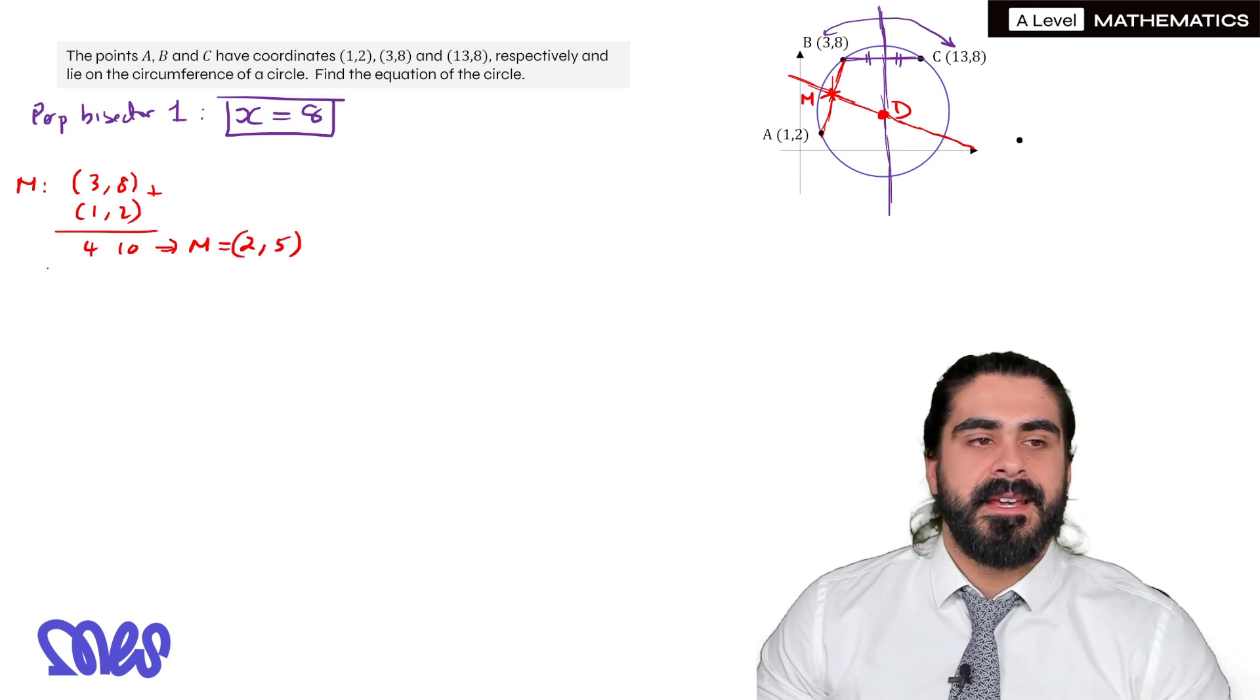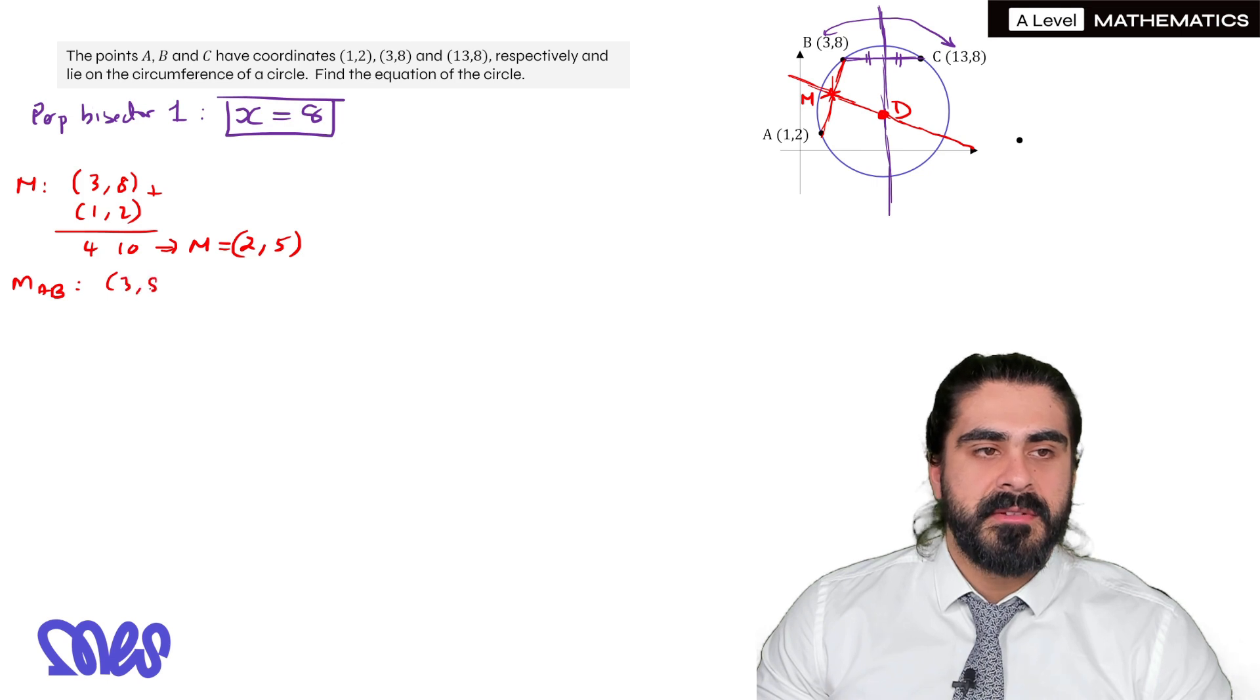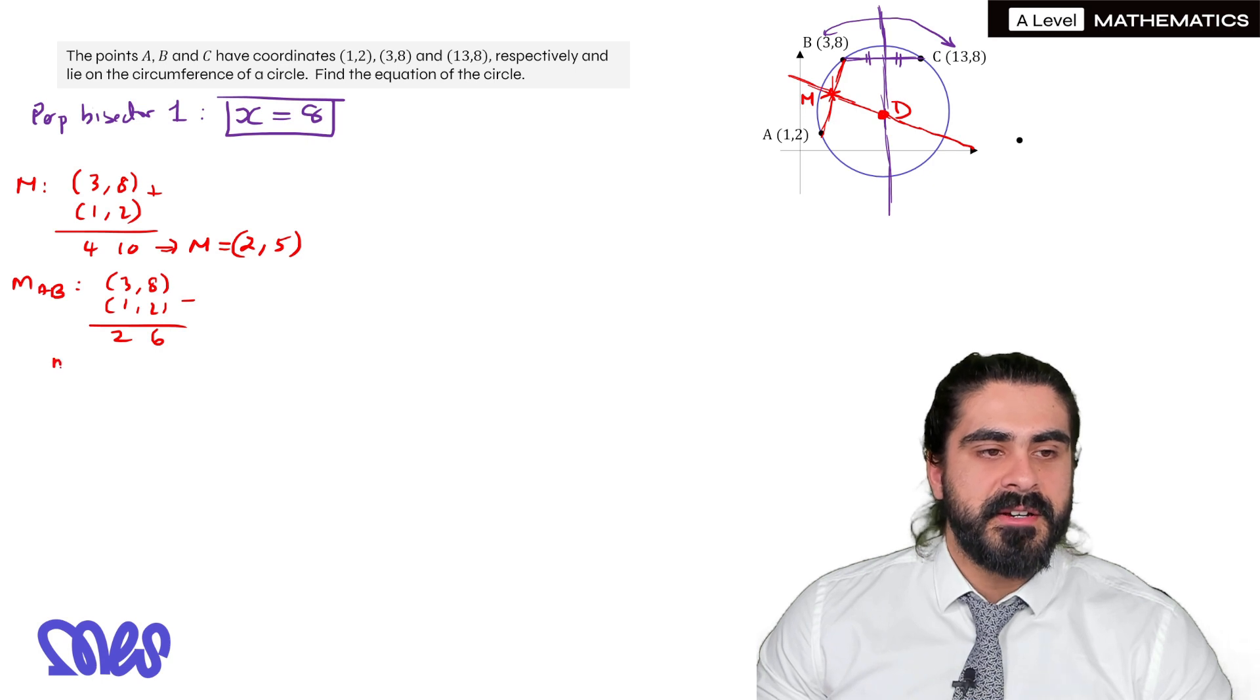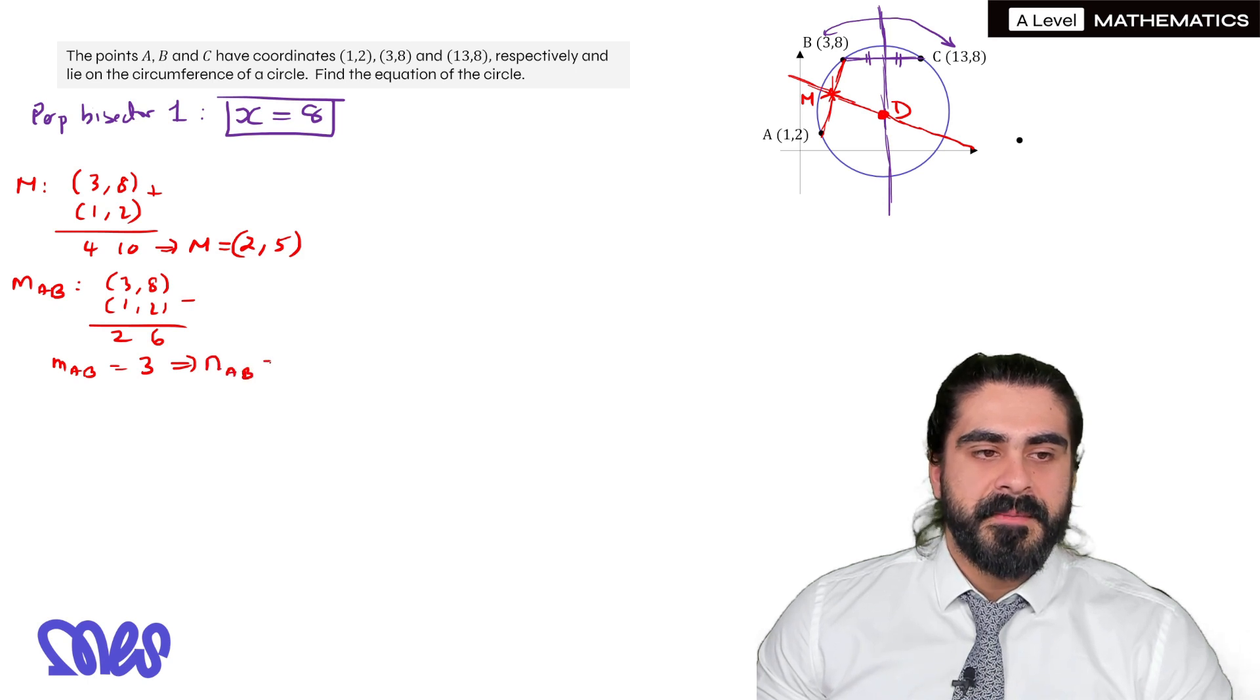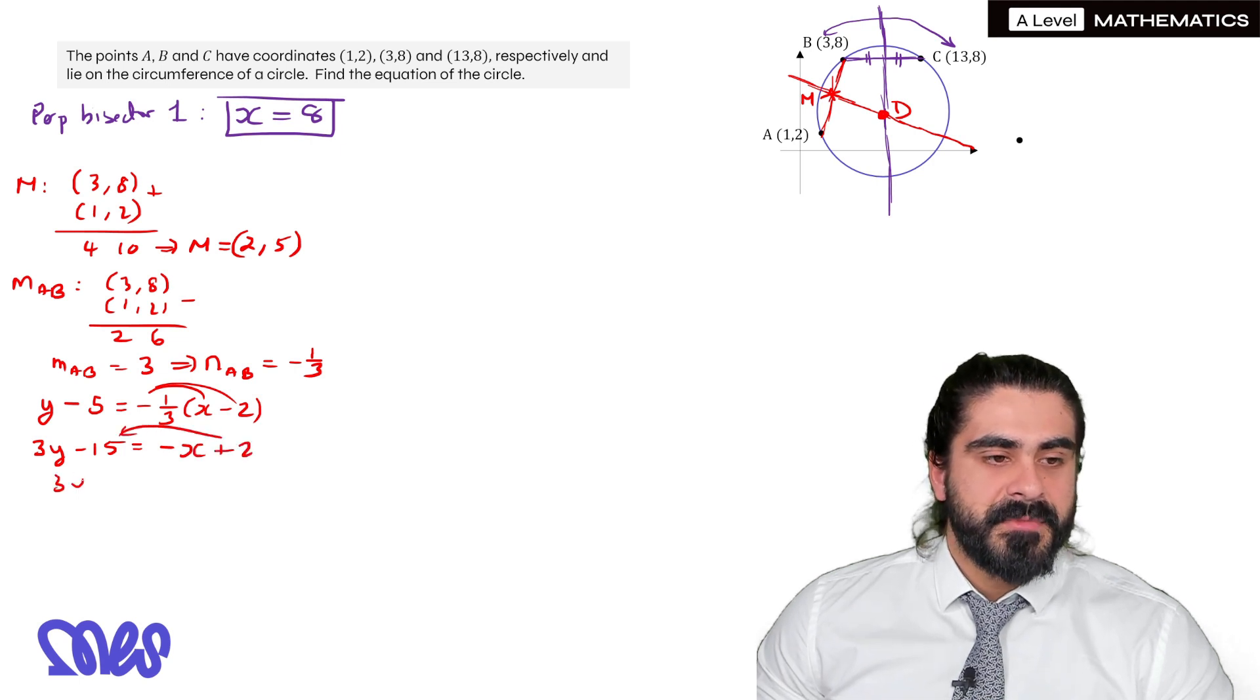Now we need to work out the gradient connecting A and B so we can do the perpendicular or the negative reciprocal. We're going to have 3, 8, 1, 2, take them away. 3 minus 1 is 2, 8 minus 2 is 6. Then 6 divided by 2, so the gradient here is 6 over 2 which is 3. So the normal of AB is minus 1 third. Then we're going to do y minus y1. y minus 5 is the gradient x minus 2. Get rid of the 3. So I have 3y by multiplying 3 by 3. 3y minus 15 is, expand the minus 1 in, minus x plus 2. Move everything to one side. So the equation is 3y plus x minus 17 is 0.